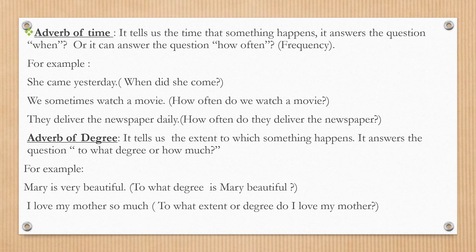We have adverb of time. It tells us when something happens, or the time that something happens. It answers the question when, or it can answer the question how often — that's frequency. For example, she came yesterday. When did she come? Yesterday. We sometimes watch a movie — how often? Sometimes. They deliver the newspaper daily — how often? Daily.